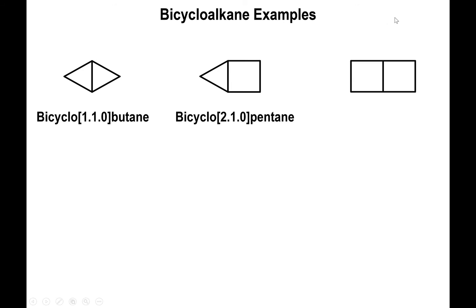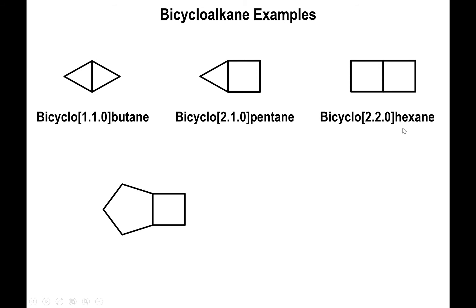Looking at the next structure, we have two carbons to the left, two carbons to the right, and zero carbons on top, so this is bicyclo[2.2.0]. Adding the numbers gives four, plus two more is six: this is bicyclohexane. Continuing on that format, the next structure has three carbons to the left, two carbons to the right, and zero on top, so this is bicyclo[3.2.0]. Adding the numbers gives five, plus two more is seven: this is bicycloheptane.